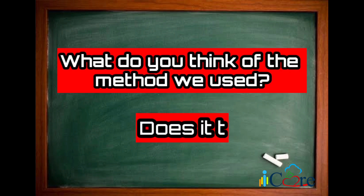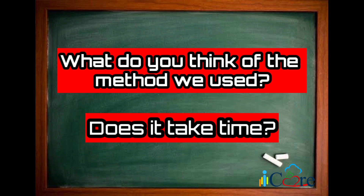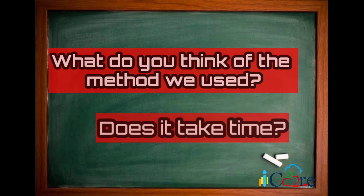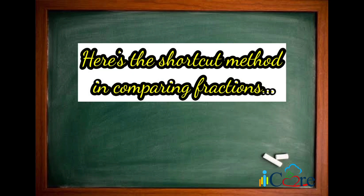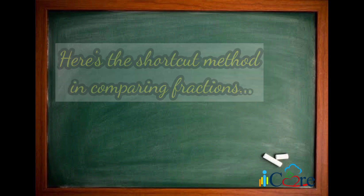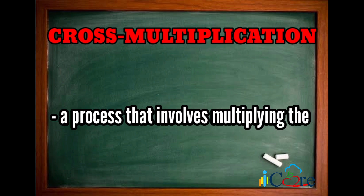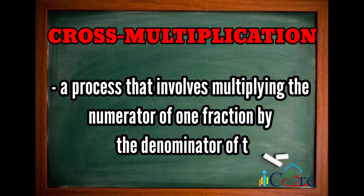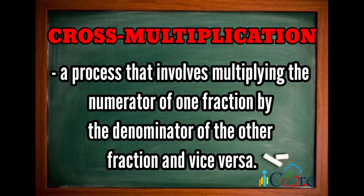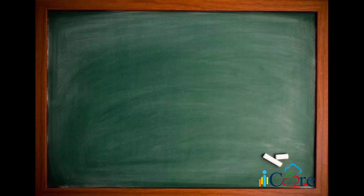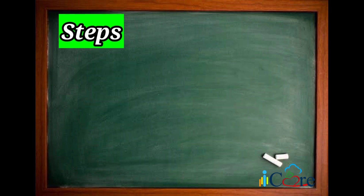What do you think of the method we used? Does it take time? Yes, it's a long method. Now, let me introduce to you the shortcut method in comparing fractions, which is called cross multiplication. This is the process that involves multiplying the numerator of one fraction by the denominator of the other fraction, and vice versa. Let's follow these steps.